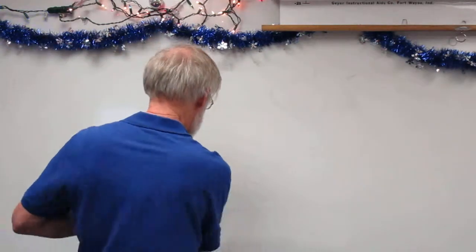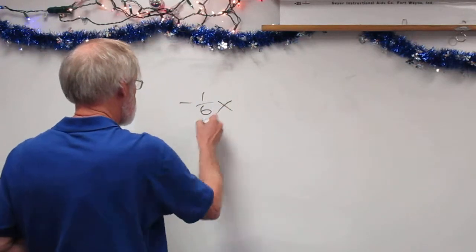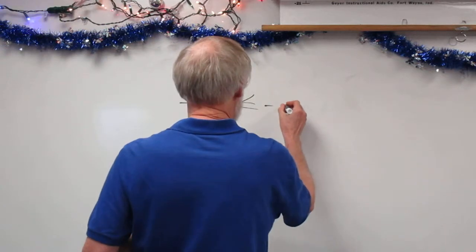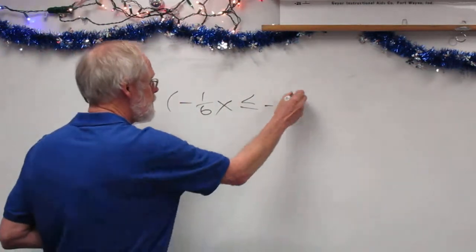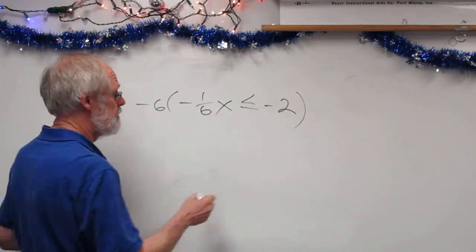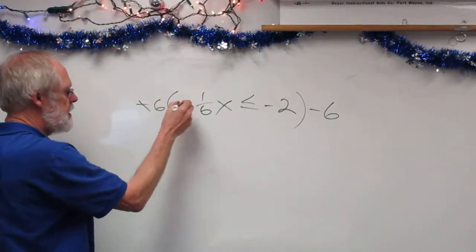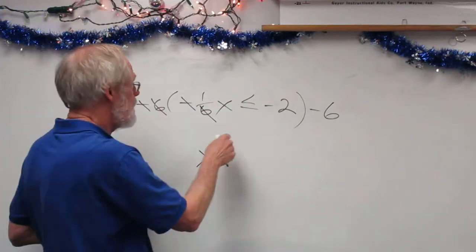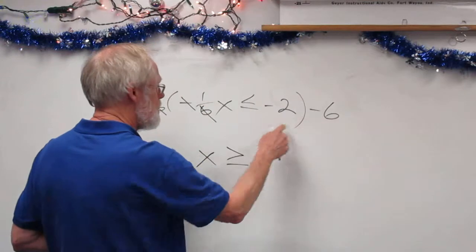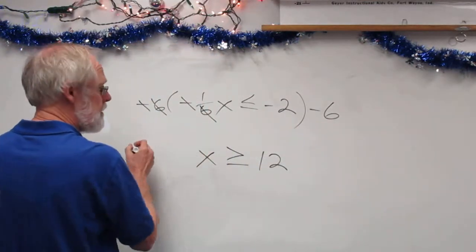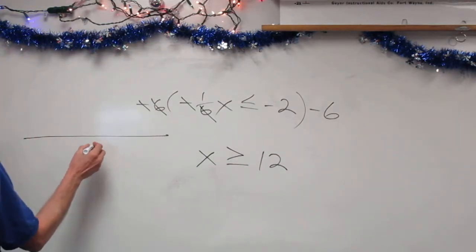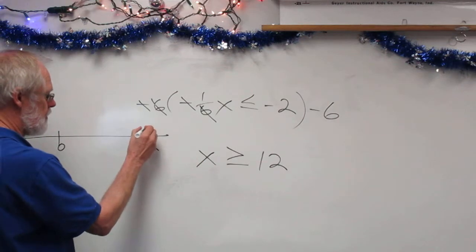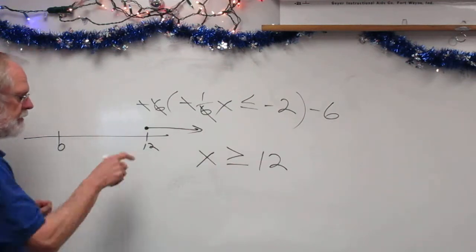Let's try another one. In this case, negative one-sixth x is less than or equal to negative 2. To solve this, I have to multiply both sides by negative 6. The negatives cancel, the numerator and denominator cancel, and I'm left with x. Because I'm multiplying by a negative number, I reverse the direction of the sign, and over here I get 2 times 6 is 12. So if I graph that, I have x greater than or equal to 12 — fill in the circle and the arrow goes to the right.